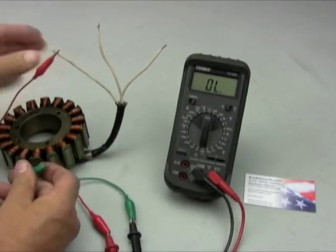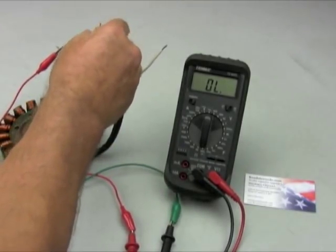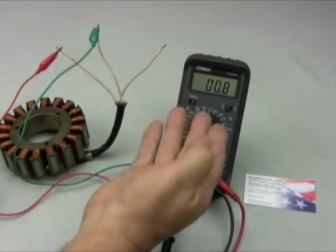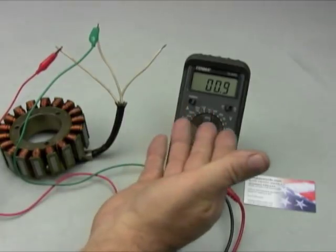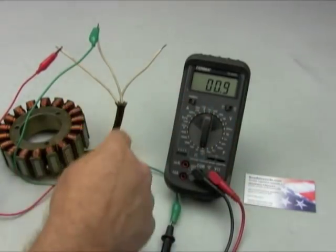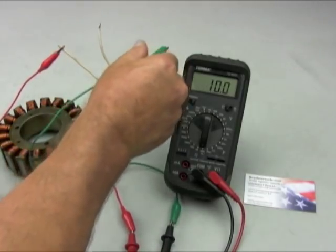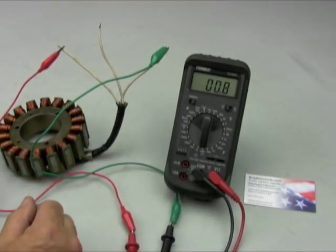So we're going to go A to B and see what we get on point A and it will probably go to point 9. There we go. So it's point 9 which is fine. That's the resistance between that set of coils. Now we'll go A to C and it should end up being the same thing. Point 9.